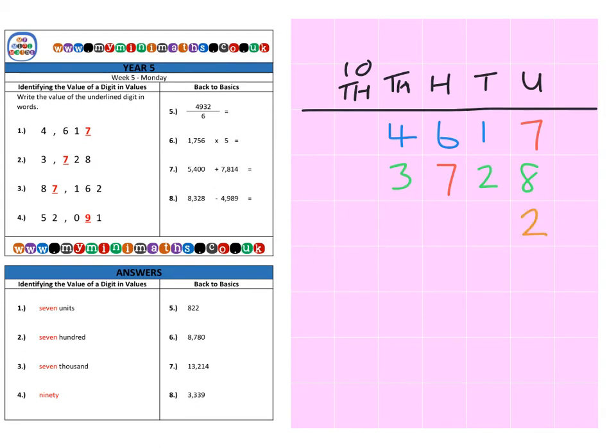So we have two units, we have six tens, we have one hundred, then we have seven in the thousands column this time,